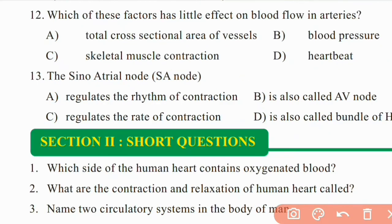Question 12: Which of these factors has little effect on blood flow in arteries? Among the options, the right answer is C: skeletal muscle contraction has the least effect on blood flow in arteries.